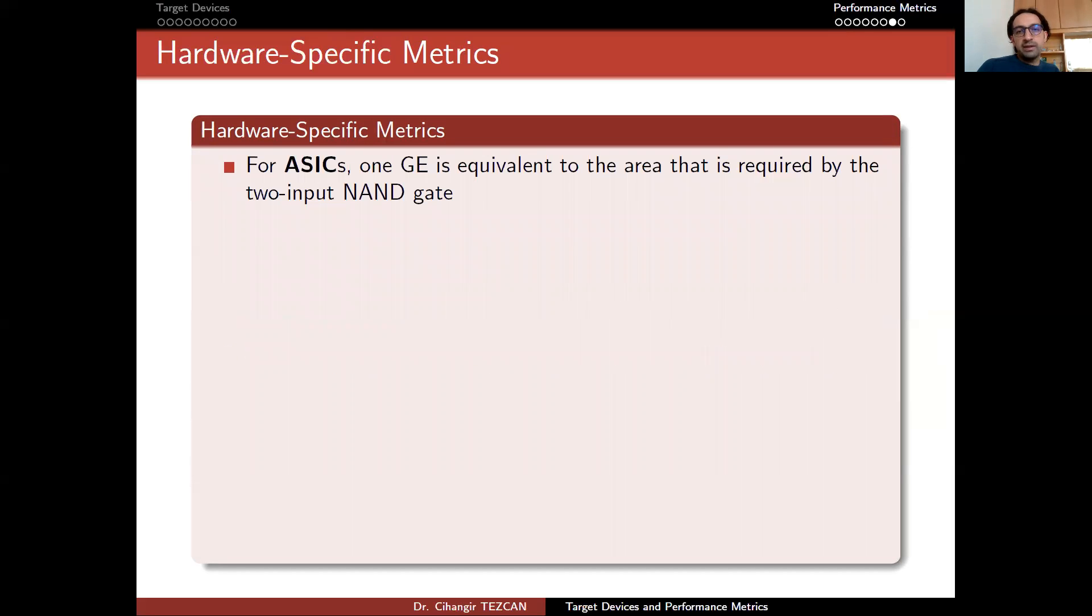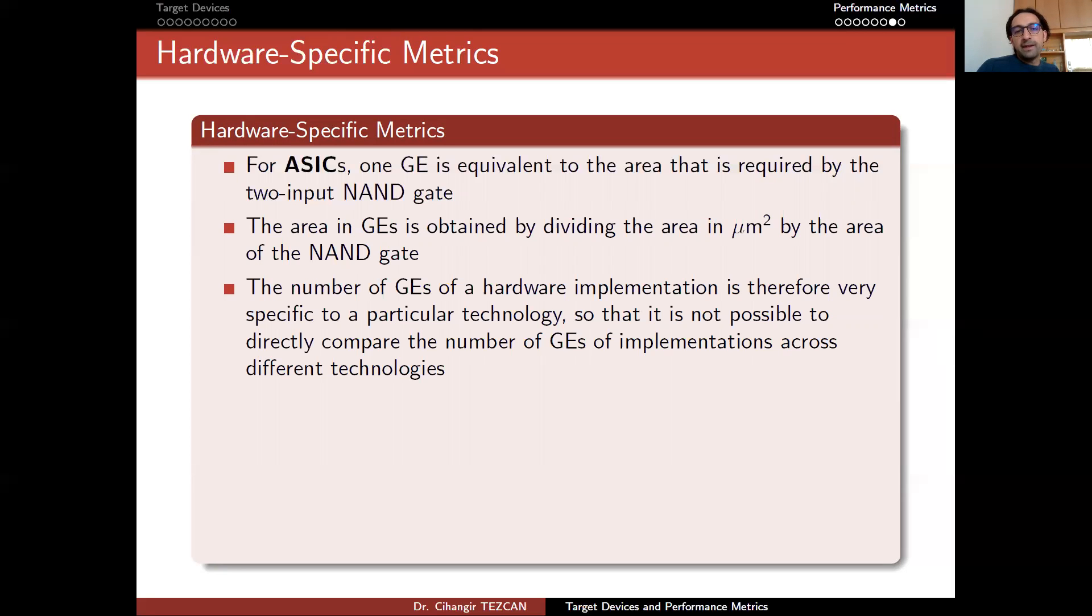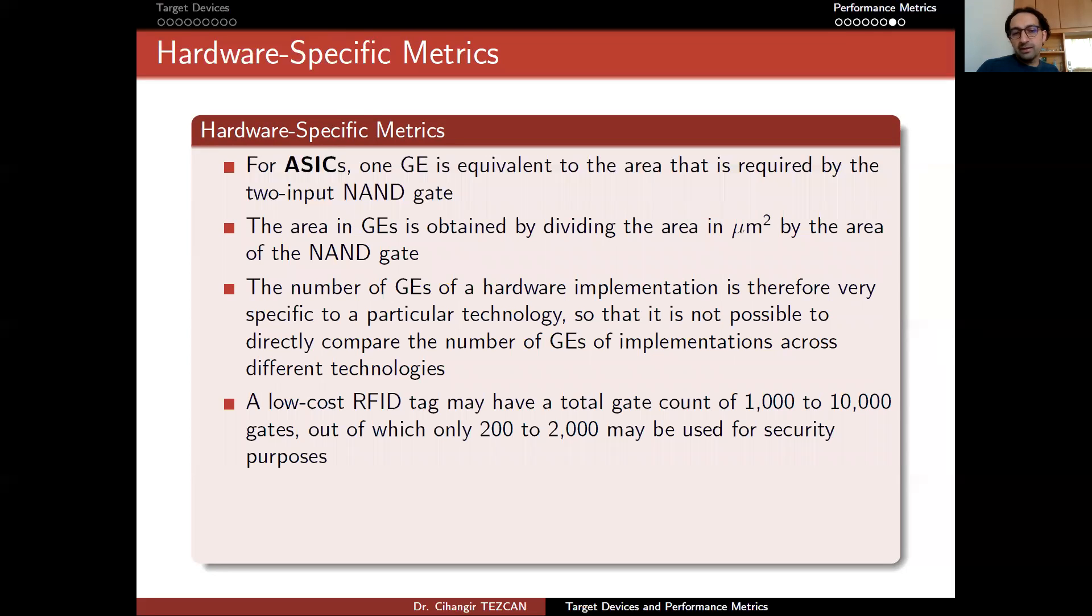For ASICs, one gate equivalent is equivalent to the area required by the two-input NAND gate. The area in gate equivalents is obtained by dividing the area in nanometers squared by the area of the NAND gate. The number of gate equivalents of a hardware implementation is therefore very specific to a particular technology, so it's not possible to directly compare the number of gate equivalents of implementations across different technologies. A low-cost RFID tag may have a total gate count of 1,000 to 10,000 gates.